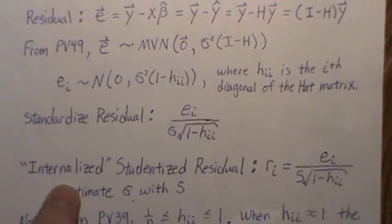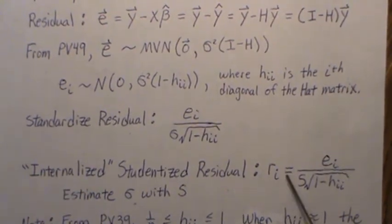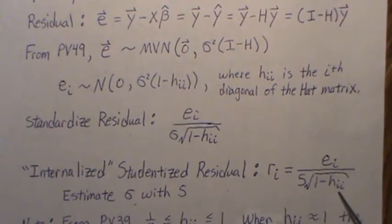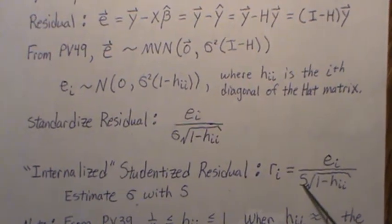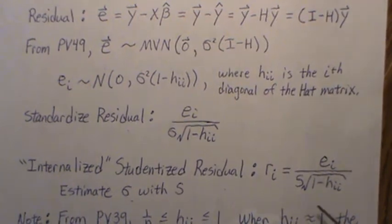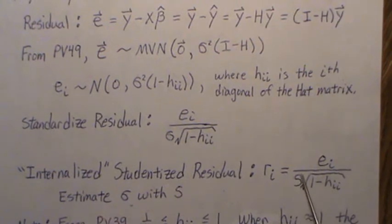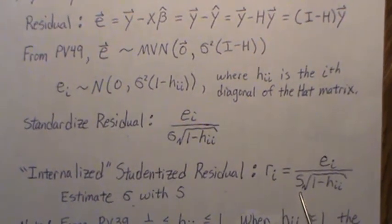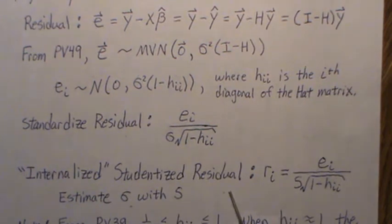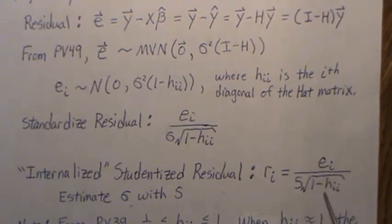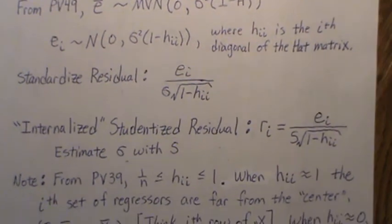This is called the internalized studentized residual. We look at the ith residual, use the ith diagonal element of the hat matrix, and in the estimate of the standard deviation we use all the data including the ith observation. In part two, for our estimate of s we use all the data except for the ith observation — that's called the externalized studentized residual. In R, the internalized version is rstandard and the externalized is rstudent.